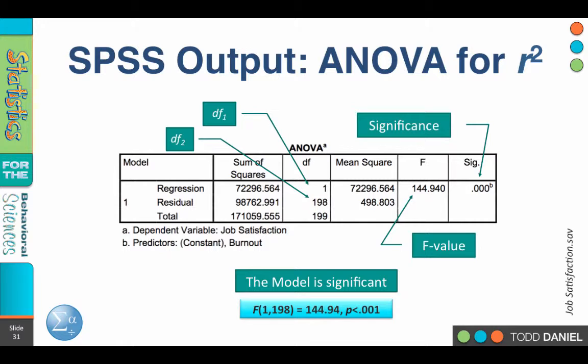And we will interpret the ANOVA exactly the same way we would when we learned about it a few weeks ago. We need to have our two degrees of freedom. In this case, 1 and 198. We need to know the F value. In this case, it's 144.9. And remember, if there is no effect, that F value will be close to 1. So there's a pretty big F value. Doesn't surprise us at all, then, that our significance value is .000, which we would write up as p less than .001. So we know from the ANOVA that the model is significant, that burnout is a significant predictor of job satisfaction. And we would write that up as F with 1 and 198 degrees of freedom equals 144.94, p less than .001.